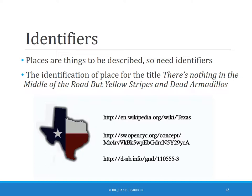Places are also things to be described, so they also need identifiers. The identification of place for the title 'There's Nothing in the Middle of the Road but Yellow Stripes and Dead Armadillos' is Texas. Here I'm providing three URIs to data points that represent Texas.